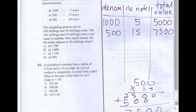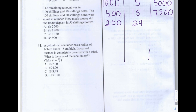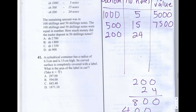For the third row, we have 200 shilling notes. The trader deposited 24 of them. Let's work out the total value: 200 multiplied by 24. 4 times 200 is 800, and 2 times 200 is 400. So the total value is 4,800 for the 200 shilling notes deposited by the trader.